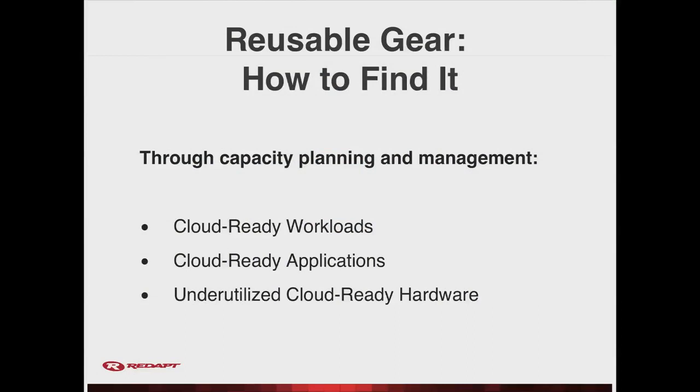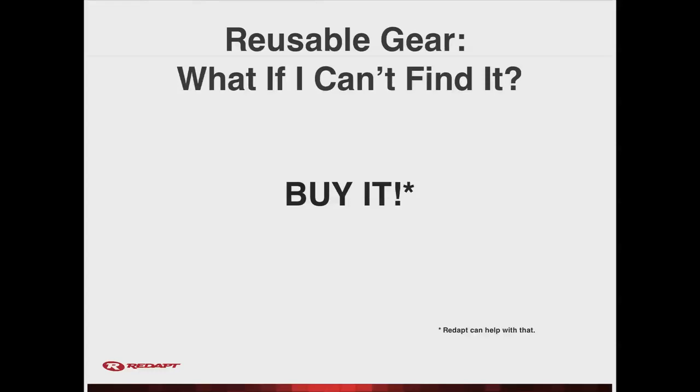How do we start? We want to find gear. If anyone here has a data center, there's going to be some usable gear out there. We help our customers do capacity management — we find those targeted cloud applications and workloads, isolate the OS from the apps, look at the bare metal, and find out where we can pull gear out. You don't have to buy new gear to start this cloud. You can build a test environment with existing gear. If you can't find the gear, you can buy it. The popular servers we see are sled servers — 2U with four servers, dual socket, 48 gigs of RAM.